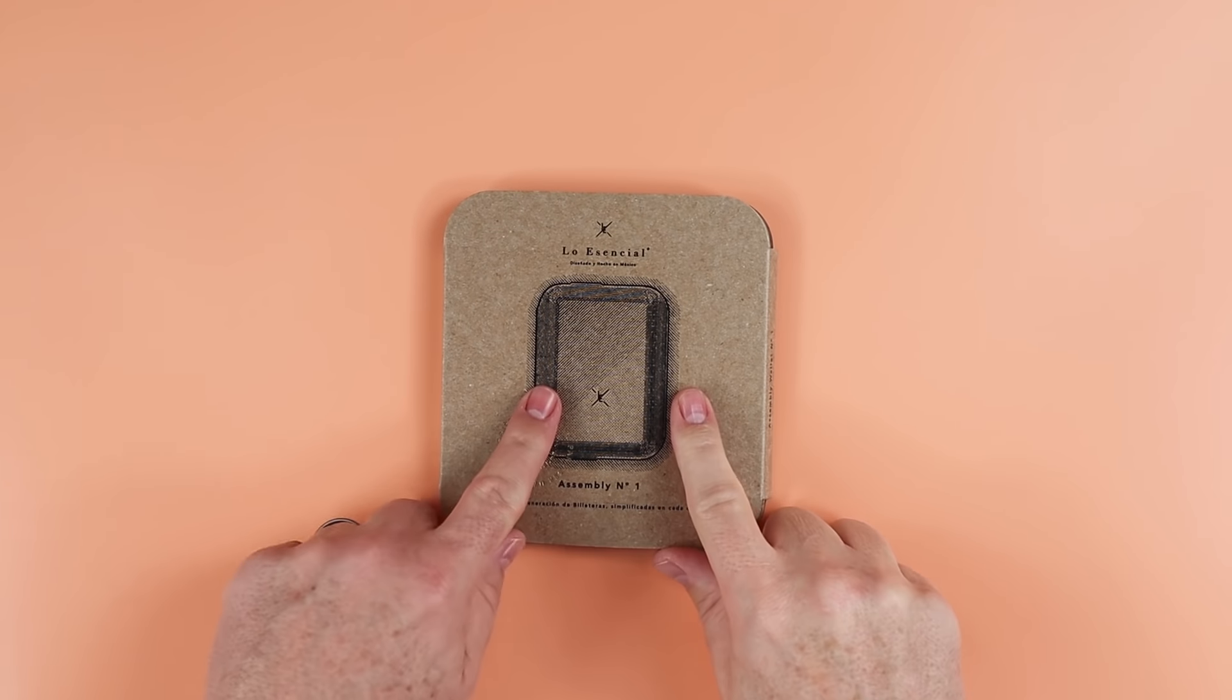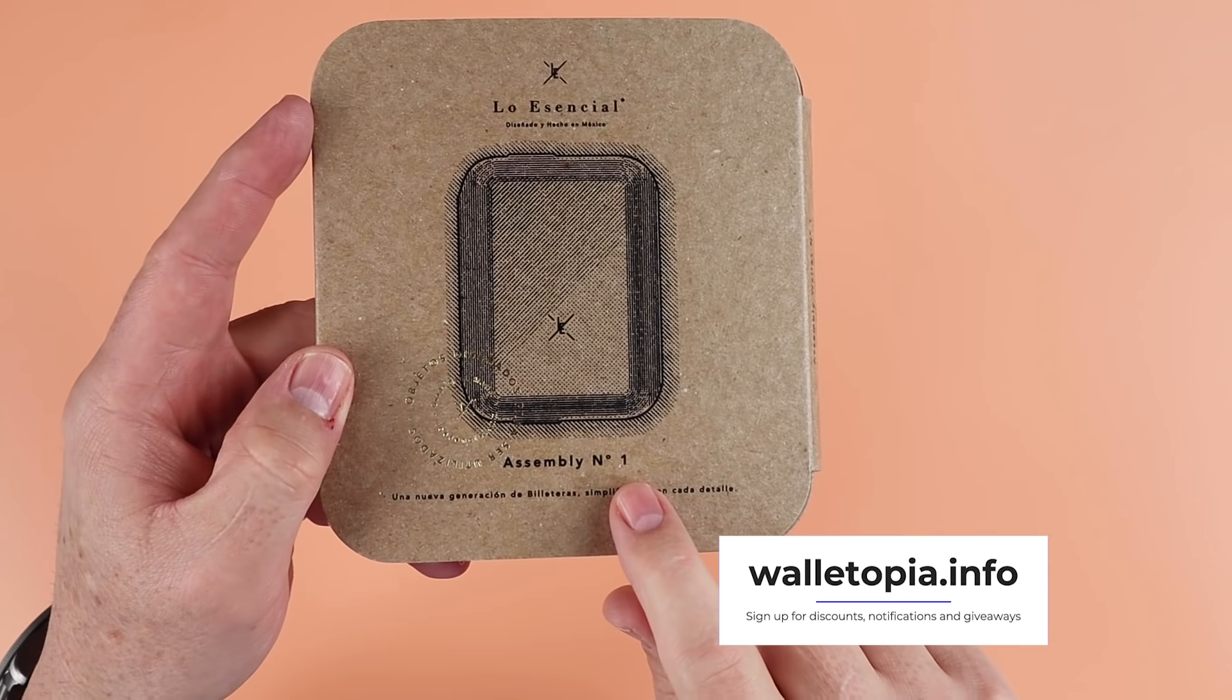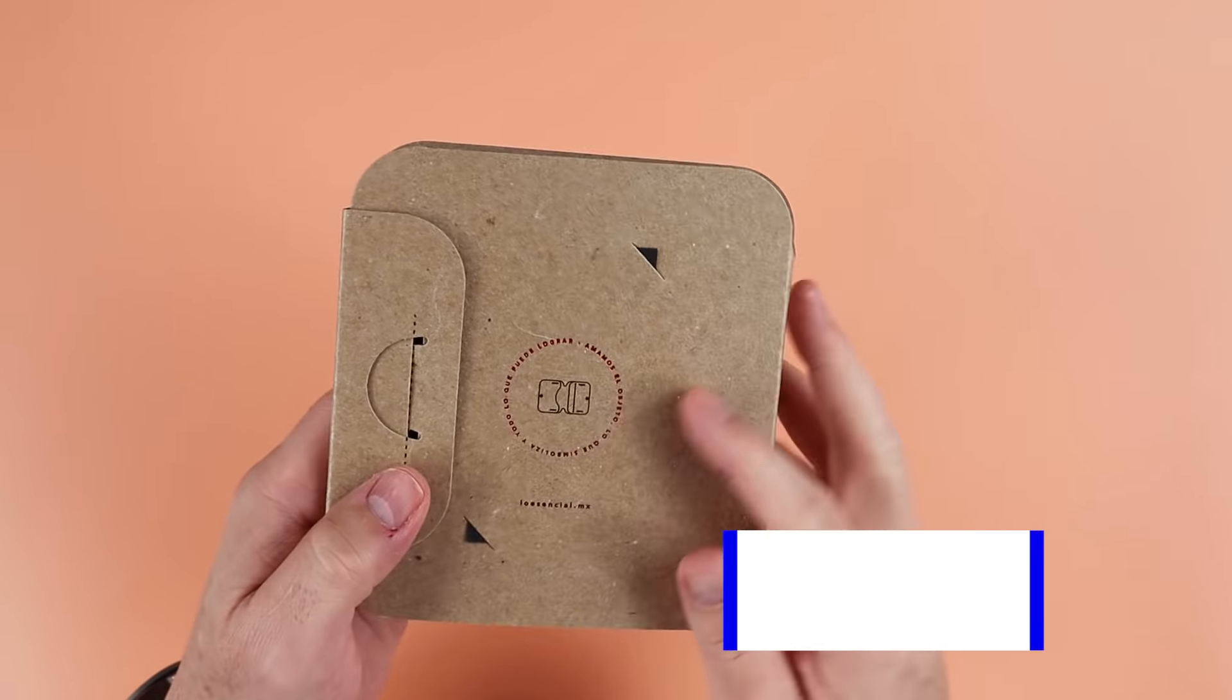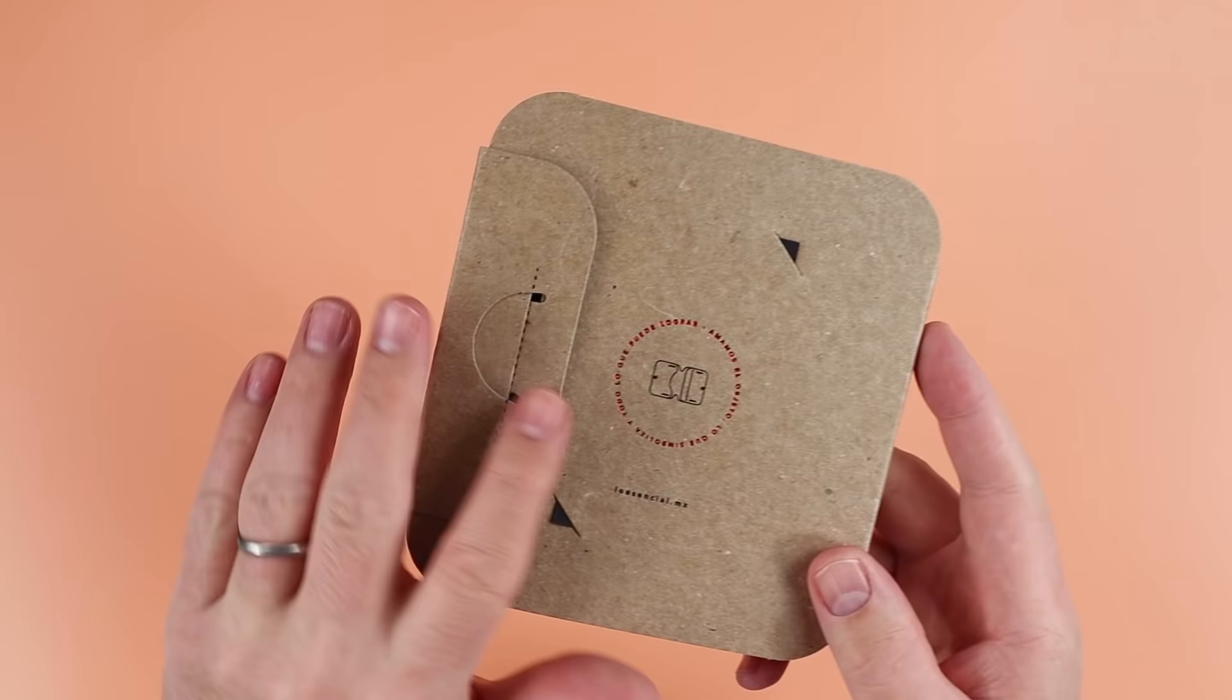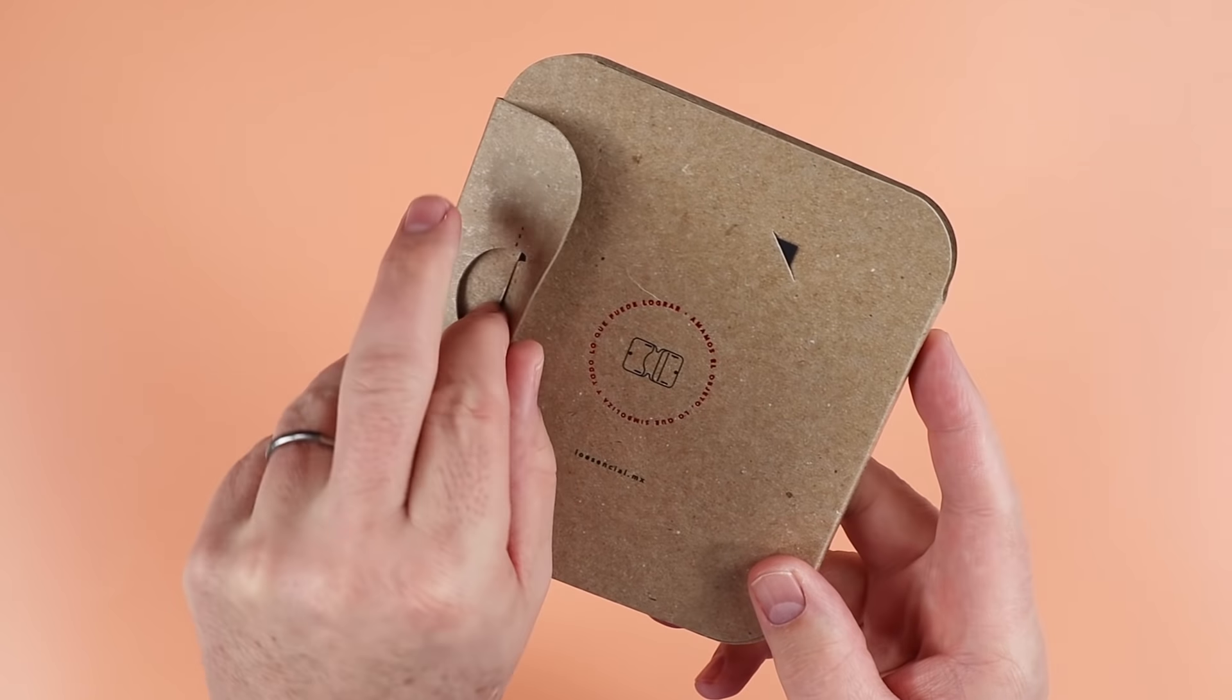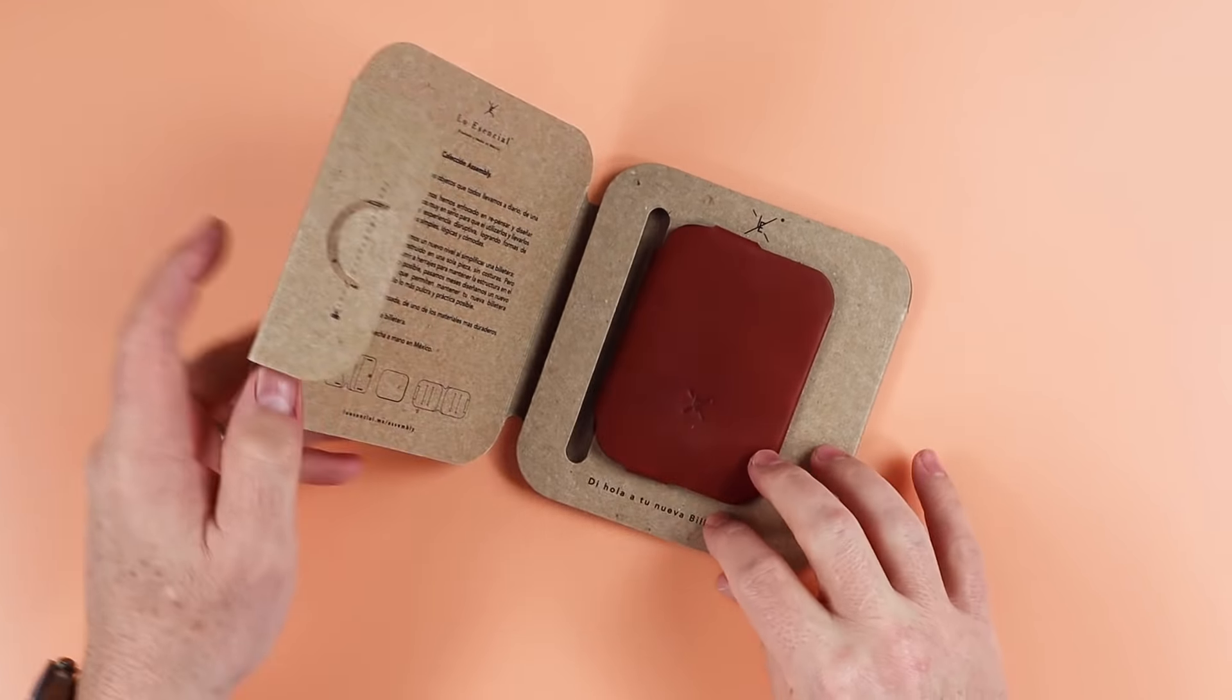We're gonna take a look at both of these wallets. Let's look at and unbox the Lo Esencial assembly number one first. This is incredibly clever packaging. Very, very cool. So if we come to the back here, we see we have a little tab that we unhook from the slot. If we open this up here,